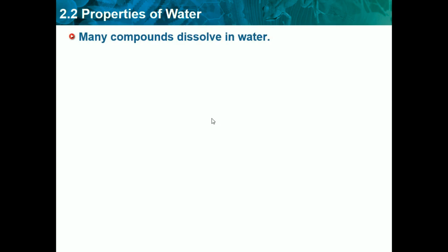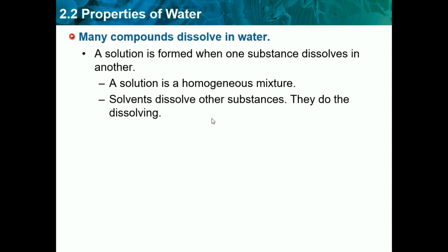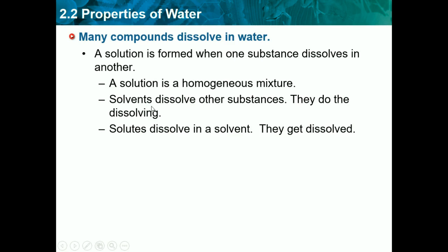Many compounds dissolve in water — this is another specialty of water. A solution is formed when one substance dissolves in another. A solution is a homogeneous mixture, meaning it's the same throughout and you can't see the separate particles. There's also a heterogeneous mixture, where you can see the different particles, like trail mix because you can see the M&Ms and the peanuts. Solvents dissolve other substances — they are the ones doing the dissolving. Solutes dissolve in a solvent. Since solvent is a longer word, it's the bigger part of the solution.